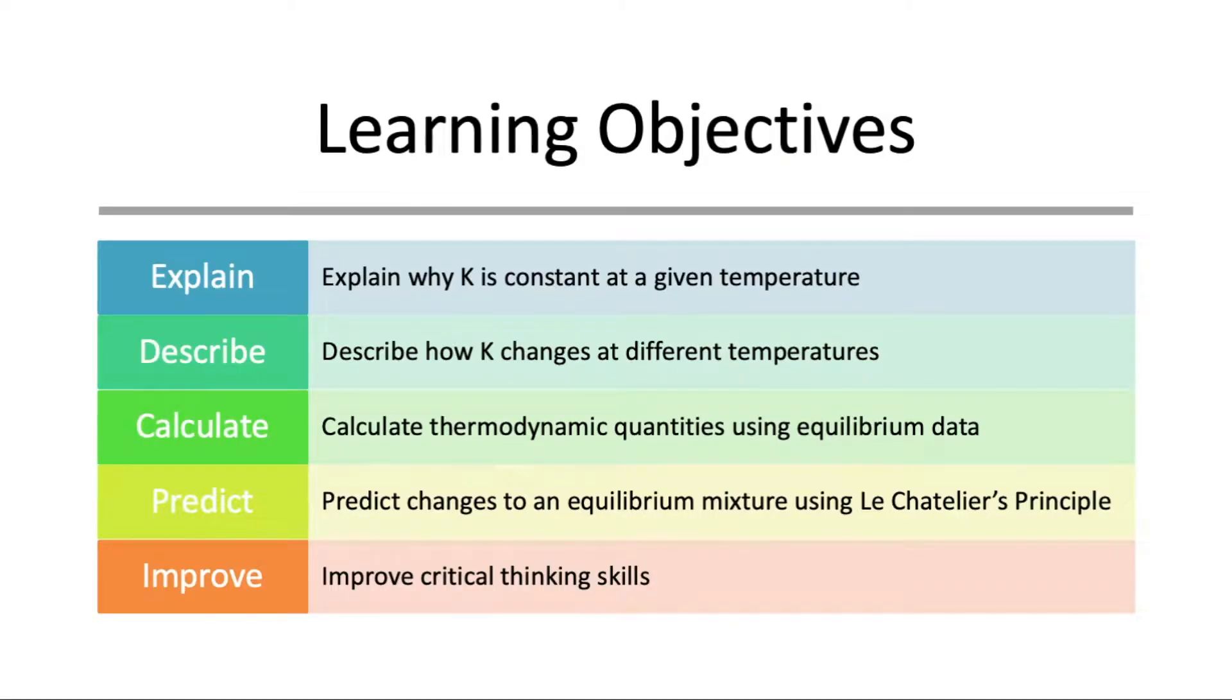Today in class you're going to do an experiment that will allow you to determine the value of the equilibrium constant for a reaction. The goals for today are to explain why K is constant at a given temperature and also describe how K changes at different temperatures. So you'll collect data at different temperatures and use that to relate the changes in K to changes in delta H and delta S and delta G.